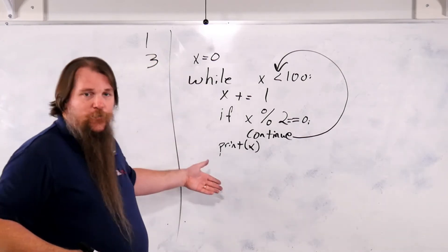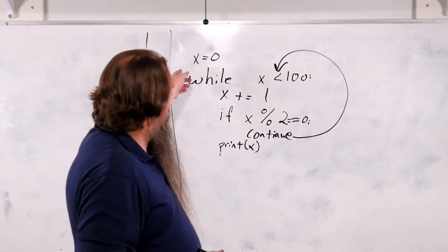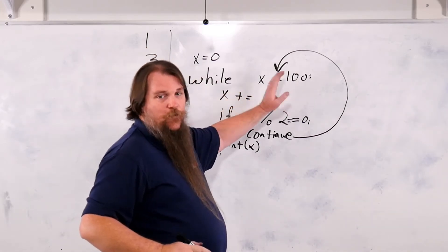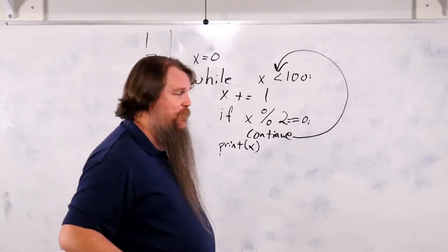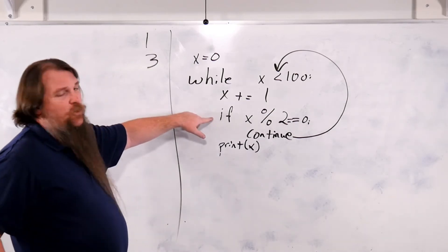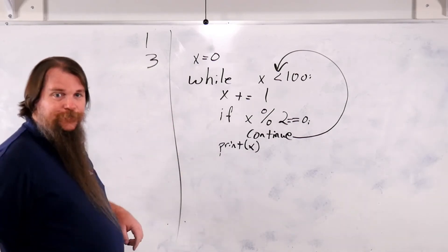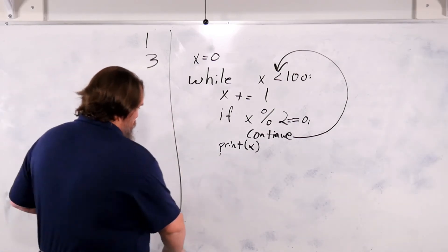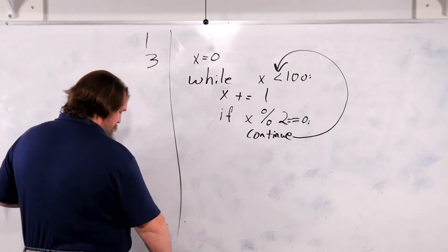So this loop will print all the values from 0 to 100, with 100 being inclusive. But it's only going to print the odd values. What if we wanted to do another limitation? Let's try the break statement.